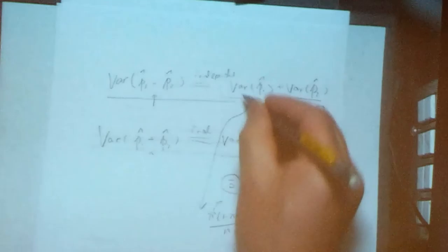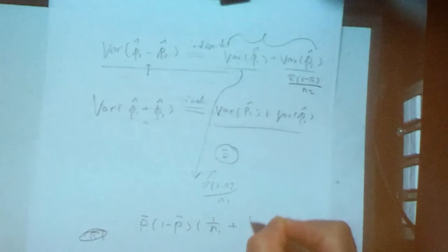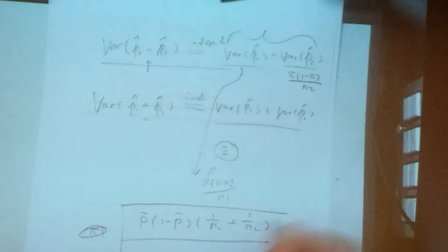Therefore, this total variance will be equal to P bar times 1 minus P bar, times 1 divided by n1 plus 1 divided by n2. So this is the variance.